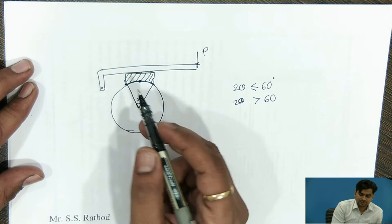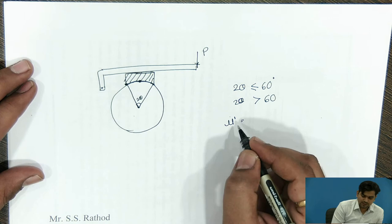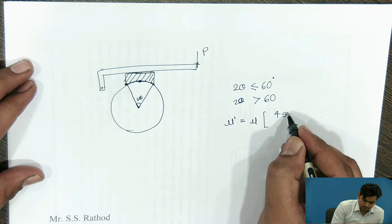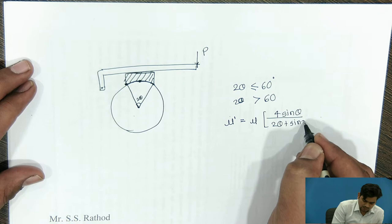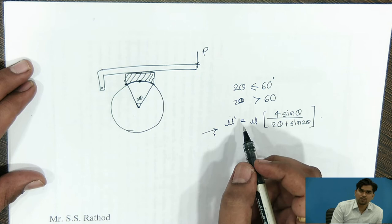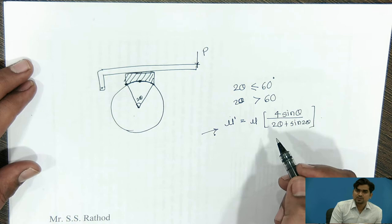For that purpose, we have to consider μ dash — the modified coefficient of friction — when the angle of the block is more than 60°. The coefficient of friction μ dash is equal to μ (the actual coefficient of friction) multiplied by 4 sin θ, divided by (2θ + sin 2θ). Using this equation, wherever μ appears, we replace it with μ dash. We use this formula when the angle of the block is greater than 60°. With this concept, we will now solve the numerical.